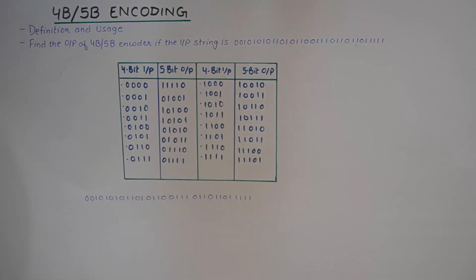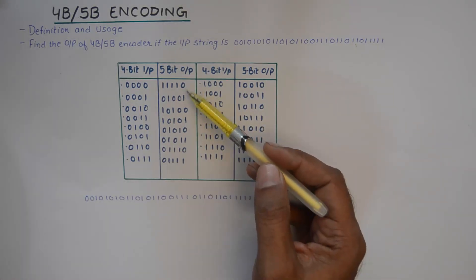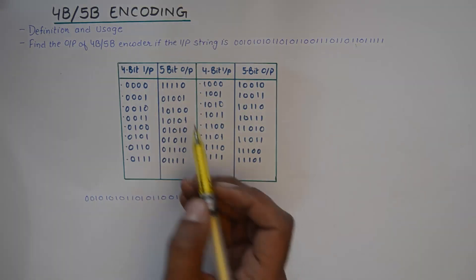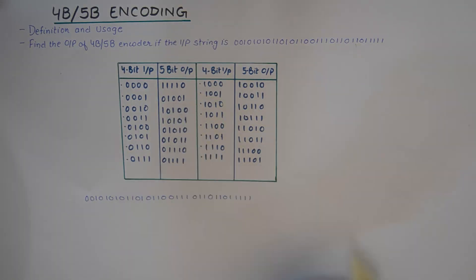Now the reason why we do that is pretty simple. Now if you look at the output set which is a 5-bit code, you'll never find three zeros in a row.